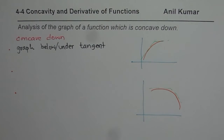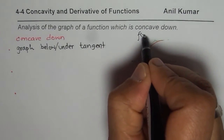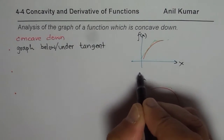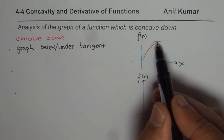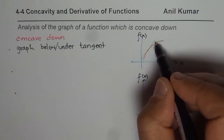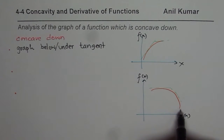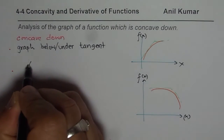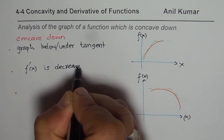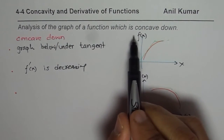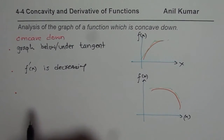The tangent gives you the slope of the function. So for the graph of f(x), what you notice is that the rate of change of the tangent is decreasing — it may be positive and going towards less and less positive, or it may start at zero and go towards more and more negative. This means the derivative is decreasing in the interval where the graph is concave down.